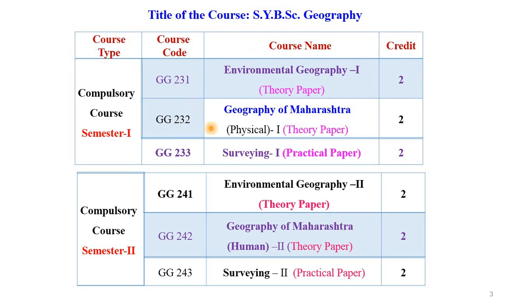The first two papers are theory papers, whereas paper three is a practical paper. The title of our first theory paper is Environmental Geography Part 1. It consists of two credits. The second theory paper is Geography of Maharashtra, the Physical Part 1. It also consists of two credits. And the third paper is a practical paper. The title of this paper is Surveying Part 1, and it also consists of two credits.